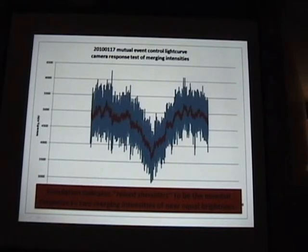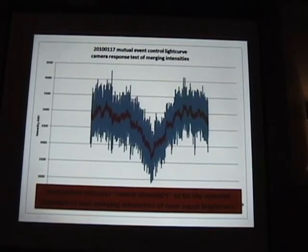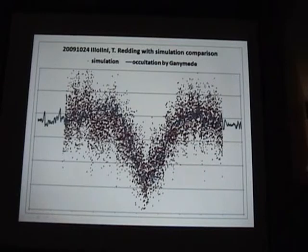Then came the question of what is normal — what should be a normal response for two merging intensities of near equal intensity? I set up a simulation using two heads of a pen across the room, illuminated with a single white light source, and had them merge and come apart. It would seem that the raised shoulders in this simulation are normal. I plotted my simulation on top of a Ganymede occultation, and indeed it's a pretty good fit.